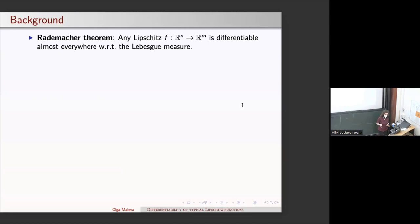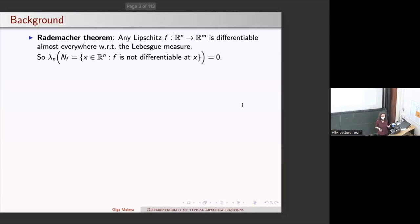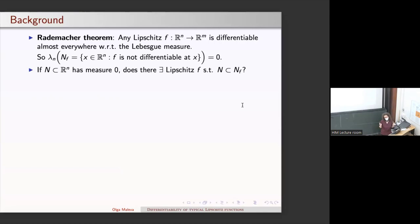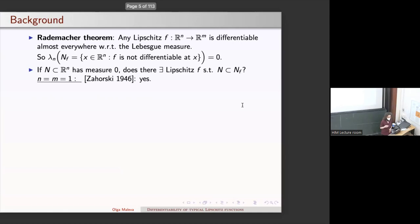As a motivation, I'm going to start with the Rademacher theorem, which tells us that any Lipschitz mapping between finite dimensional spaces is differentiable almost everywhere with respect to the Lebesgue measure. And so, if we look at the set where this mapping is not differentiable, then it has measure zero. The very natural question which was asked long time ago was: if we start with a set of measure zero, can we always find a function which would have a set of points of non-differentiability exactly equal to it, or at least containing it? For the containing case, the answer is yes for functions from R to R.